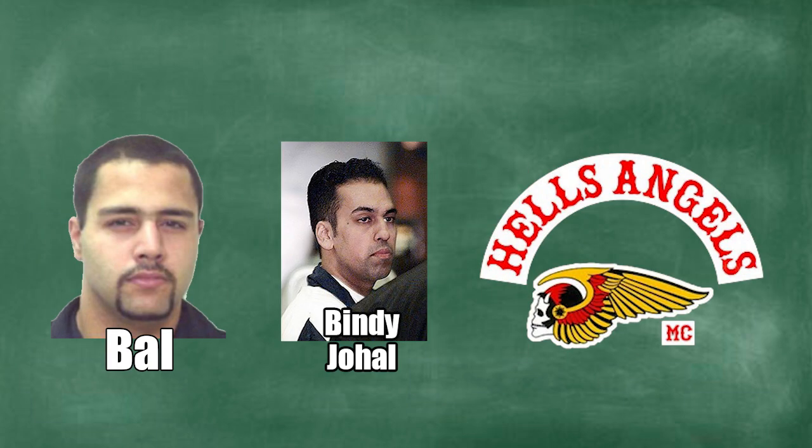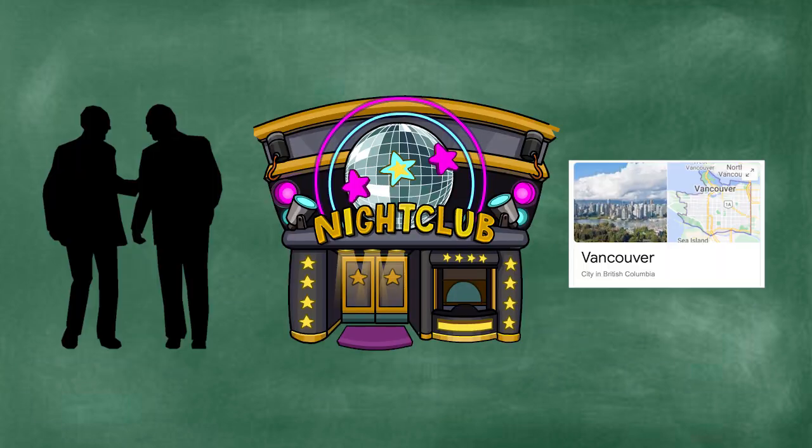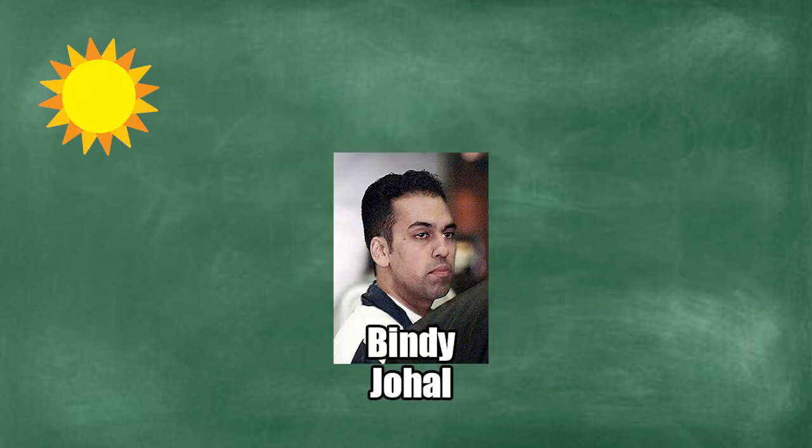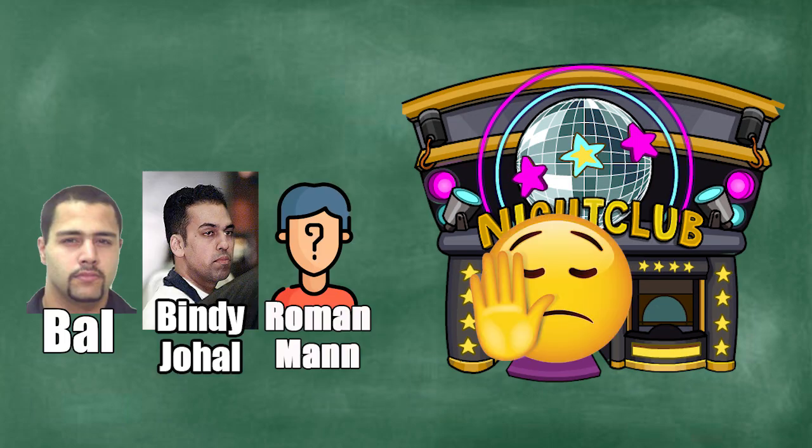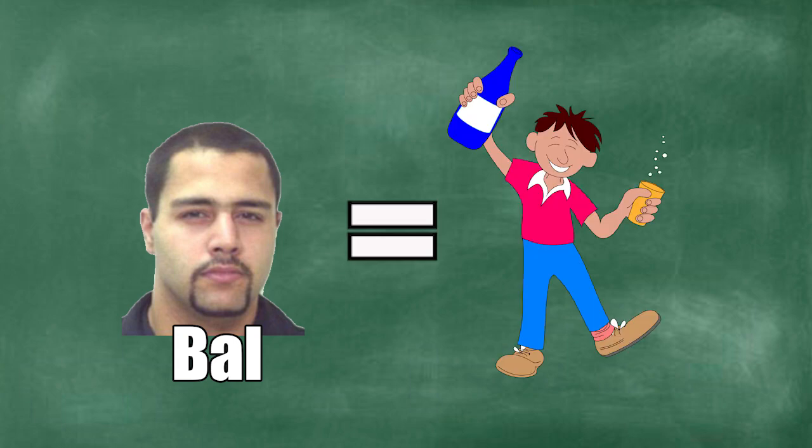According to Bal, Johal got acquainted with a Hell's Angels member who invited him to their clubhouse in Vancouver. On that day, Johal showed up with his lieutenants, Bal and Man. However, they were rudely denied entry at the door. Bal, being drunk at the time, got angered by the situation and pulled out his gun and shot a few bullets in the air. He even threatened to shoot one of the Hell's Angels in the leg.